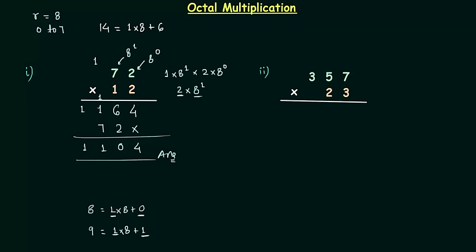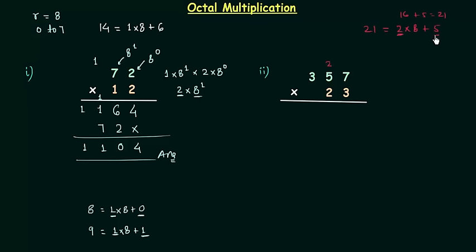Now we will move to the second example, where we have to multiply 357 by 23. We will repeat the same procedure. I will first multiply 357 by 3. 7 multiplied by 3 is 21. 21 is not an octal number, so we will break it: 2 multiplied by 8 plus 5. 8 multiplied by 2 is 16, and 16 plus 5 is 21. So 2 is the carry and 5 is the result.